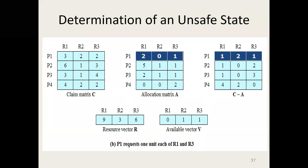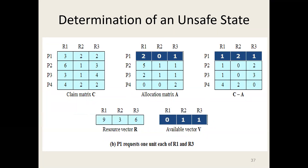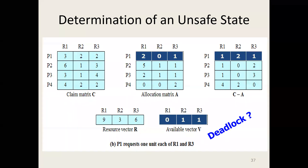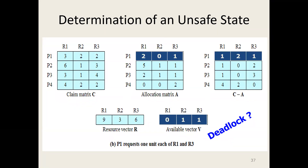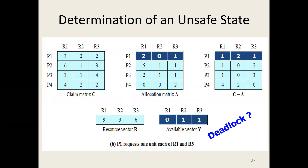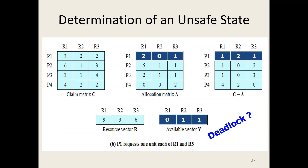In this situation it will end up in a deadlock. If all sequences are unsafe states, it will end up in a deadlock. But on the other hand, if we can find a single safe state, then the system will not end up in a deadlock.